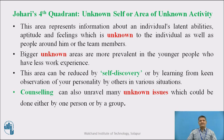Johari's fourth quadrant is the unknown self or area of unknown activity. This area represents information about an individual's latent abilities, attitude and feelings which is unknown to the individual as well as to people around them or team members. Bigger unknown areas are more prevalent in younger people who have less work experience. This area can be reduced by self-discovery or by learning from keen observation of your personality by others in various situations. Counselling can also unravel many unknown issues, which could be done either by one person or by a group.